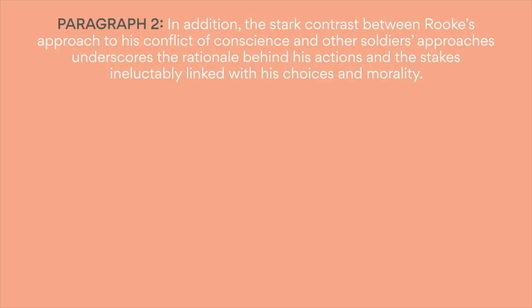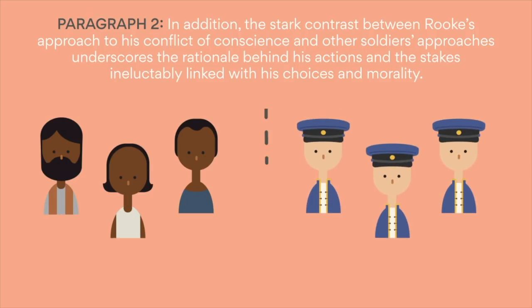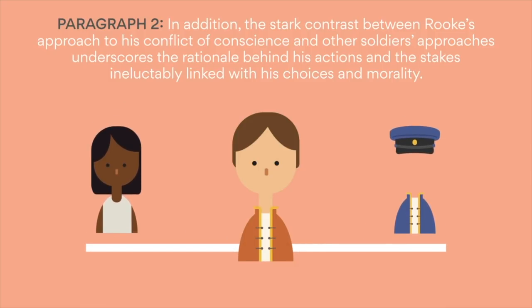Paragraph two: In addition, the stark contrast between Rook's approach to his conflict of conscience and other soldiers' approaches underscores the rationale behind his actions and the stakes ineluctably linked with his choices and morality. This paragraph revolves around Grenville's inclusion of a host of different characters and outlooks, from Indigenous Australians to intransigent colonial perspectives. I would emphasize the importance of juxtaposition between these different perspectives, as it elucidates the values and beliefs underpinning each individual's choices during conflict. Although the core of the essay discusses internal conflicts, highlighting the connections between internal and external conflict will add an extra layer of complexity. Rook's conflict of conscience results in his permanent departure from Australia, and fleshing out the ramifications of dissent and opposition towards the other colonials is key in demonstrating your understanding of the complex and intertwined nature of conflict.